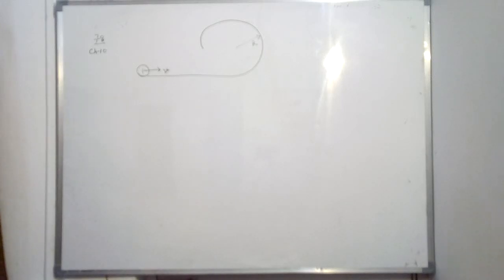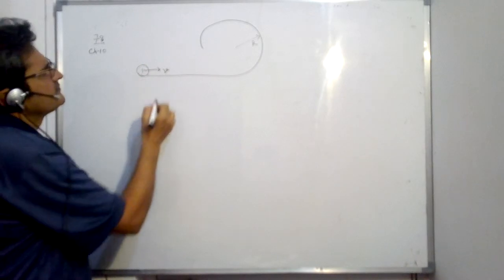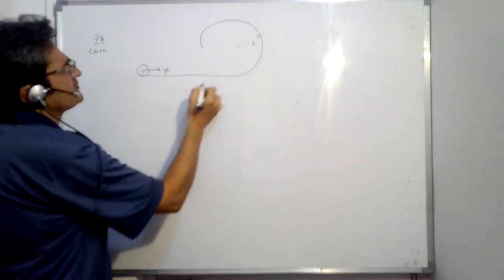We will solve problem 78 of chapter 10 of H.C. Verma. In this we are given a sphere which is given a velocity V. It rolls without slipping.